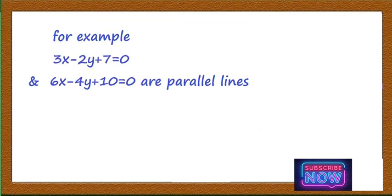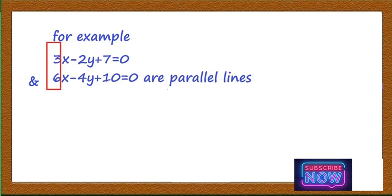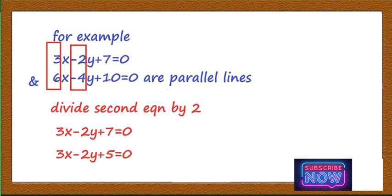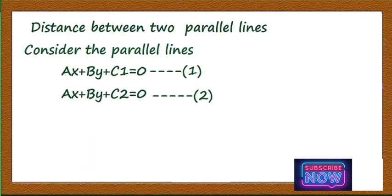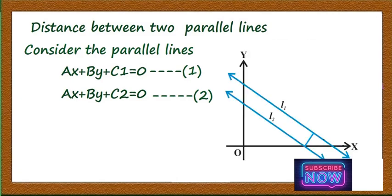Either the coefficients of x and y will be the same or proportional. For example, 3x − 2y + 7 = 0 and 6x − 4y + 10 = 0 are parallel lines. Here the coefficients are not equal but dividing the second equation by 2 gives 3x − 2y + 5 = 0, so the coefficients of x and y are now the same. Consider the parallel lines ax + by + c1 = 0 and ax + by + c2 = 0.